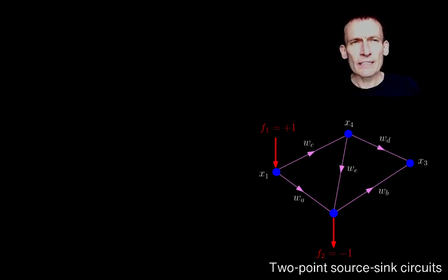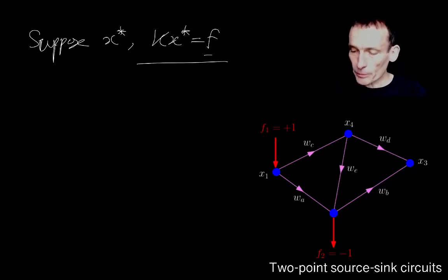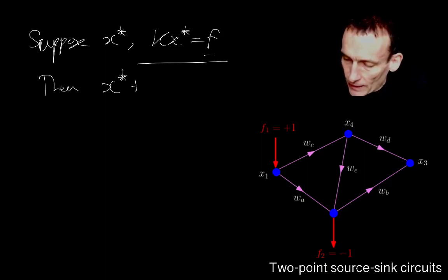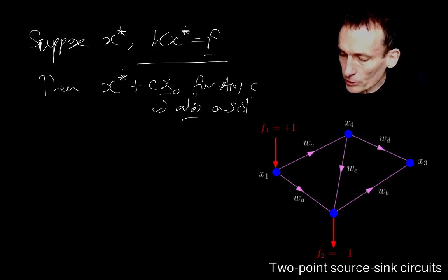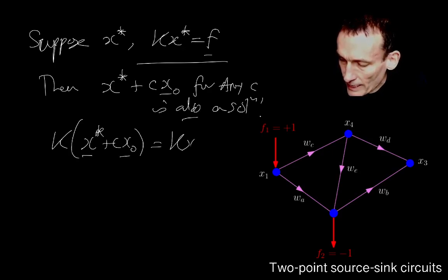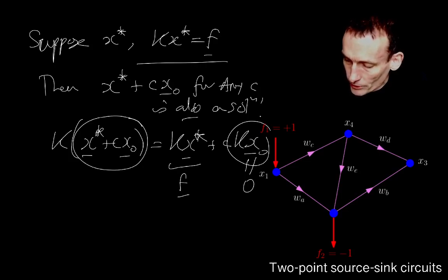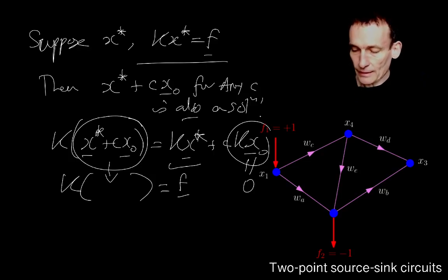Let's think about what that right null vector means for K. Well, let's suppose that we know some X star such that KX star is equal to F. In this case, we've got 1 minus 1, 0, 0. But suppose we found a solution to this, a set of potentials that satisfied the problem. Then notice that X star plus CX0 for any C is also a solution. Because, look, KX star plus CX0 is equal to KX star plus CKX0. But this is 0 because X0 is in the right null space of K. And this is, of course, F.